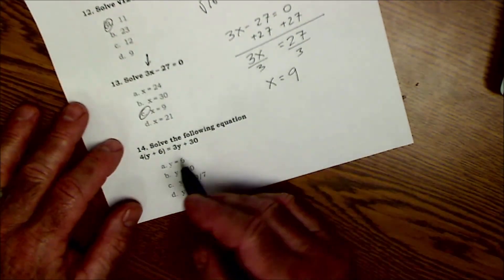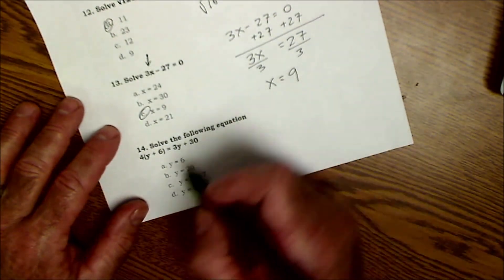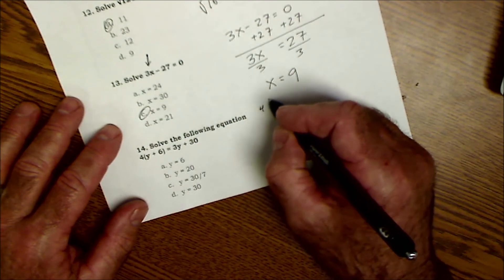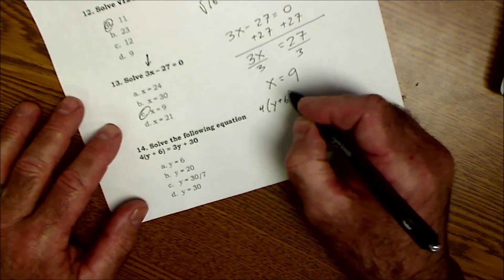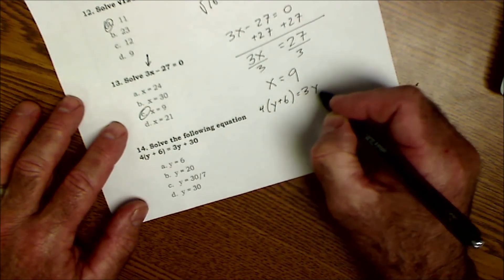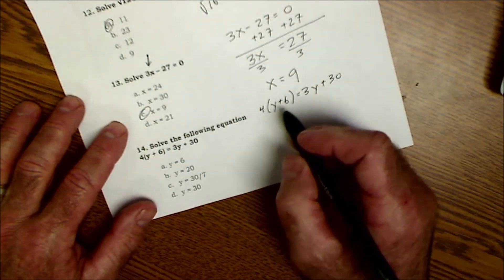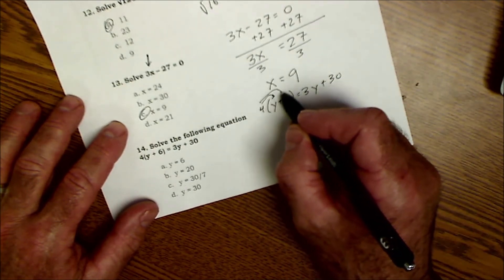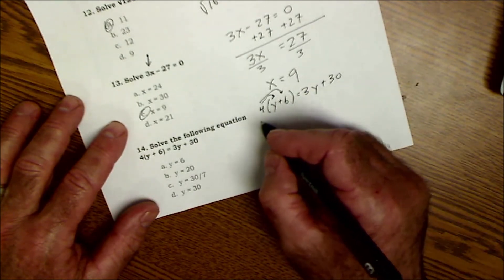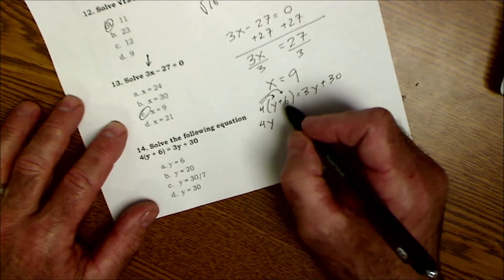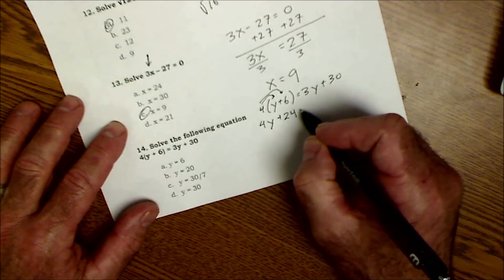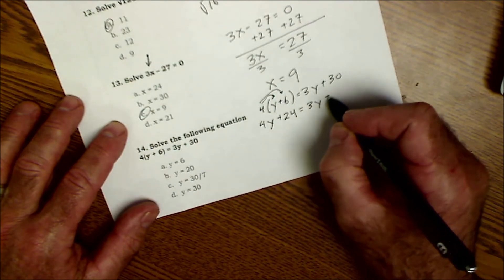And the last one right here: solve the following equation. So the first thing I'm going to do is distribute that 4 through this quantity, because 4 is times this whole thing, so I have to distribute this 4 through the quantity. So 4 times y is 4y, 4 times 6 is 24, is equal to 3y plus 30.